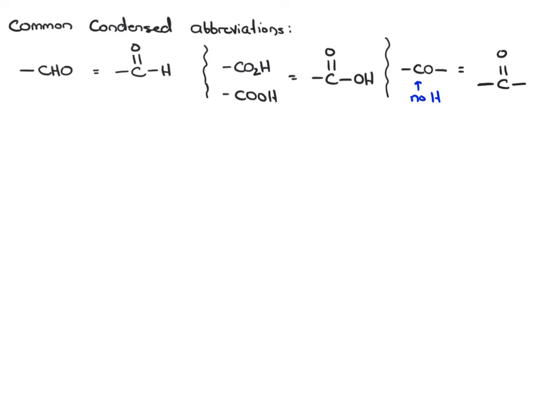There are a few common condensed abbreviations you need to know. CHO, not to be confused with COH, is always a carbon double bonded to oxygen, single bonded to hydrogen at the end of a chain. CO2H or COOH is a carbon double bonded to oxygen with an OH. If you see CO in the middle with no hydrogen on the carbon, that's a carbon with a double bond O attached.